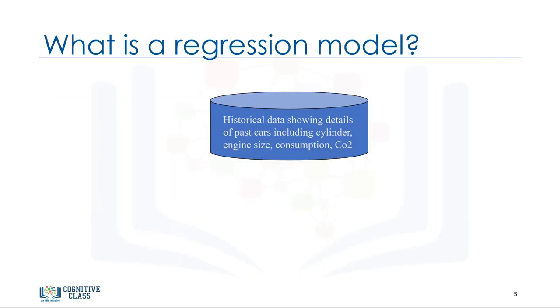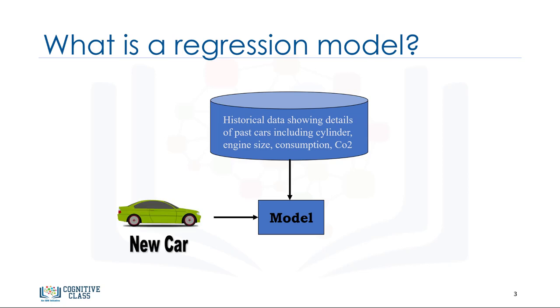So, what we want to do here is to use the historical data of some cars using one or more of their features and, from that data, make a model. We use regression to build such a regression estimation model. Then the model is used to predict the expected CO2 emission for a new or unknown car.